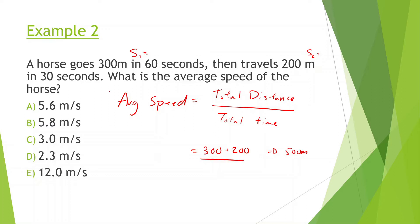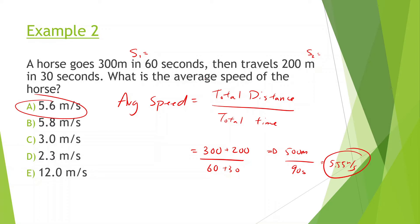You're not finding the speed of each segment, adding them, and dividing by two. What you're doing is adding the total distance, which is going to be 300 plus 200, which is 500 meters. And then you're doing the total time, which is 60 plus 30, equal to 90 seconds. Then we put into our calculators 500 divided by 90, and we get 5.55 meters per second. Total distance divided by total time.